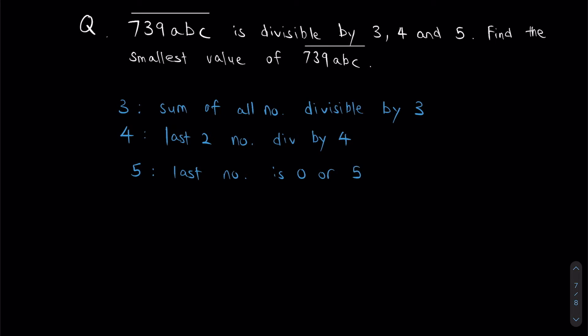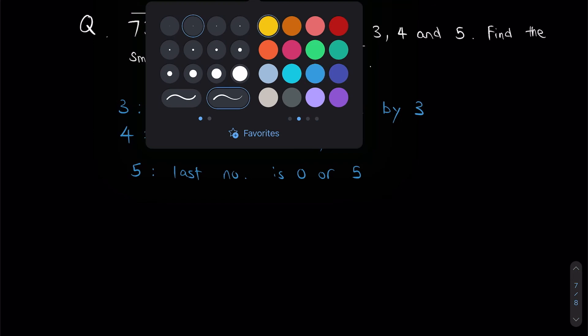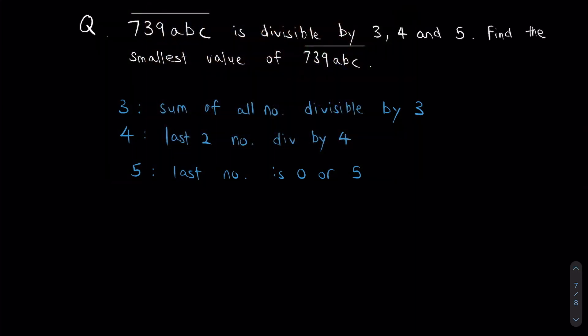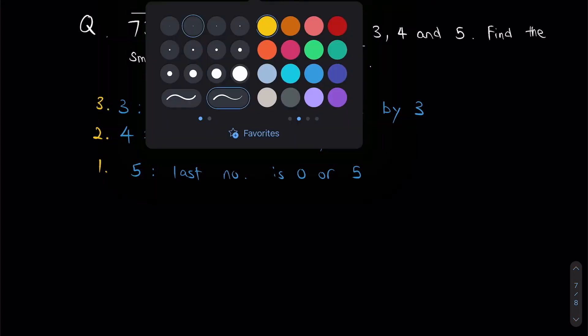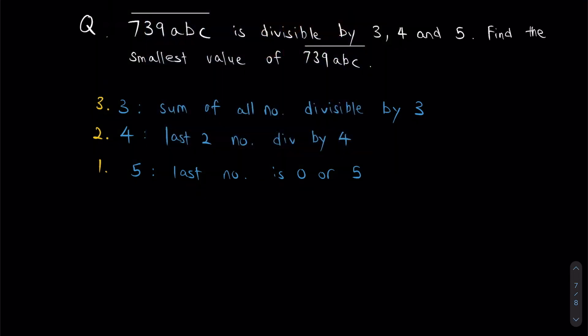So if we look at these 3 divisibility rules, let's rank them from the easiest to find out to the hardest. The divisibility rule of 5 would probably be number 1 since we're only concerned with 1 number. Divisibility rule of 4 would be number 2 since we're concerned with 2 numbers. And divisibility rule of 3, that's the hardest one because we are concerned with all numbers. So what we're going to do is, we're going to check the divisibility rule of 5 first.